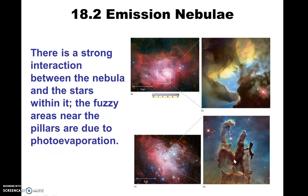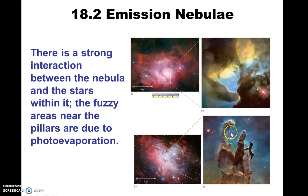Photon evaporation is basically the same kind of thing — it's a slightly different phenomenon. Imagine a thick foggy day very early in the morning, and as the sun gets higher in the sky the fog begins to clear. What's happening here with the haziness around the pillars is that the light within it is breaking up some of the gas and dust. The photons themselves are not only carrying energy away, but they're moving some of the gas and dust away from the pillars.